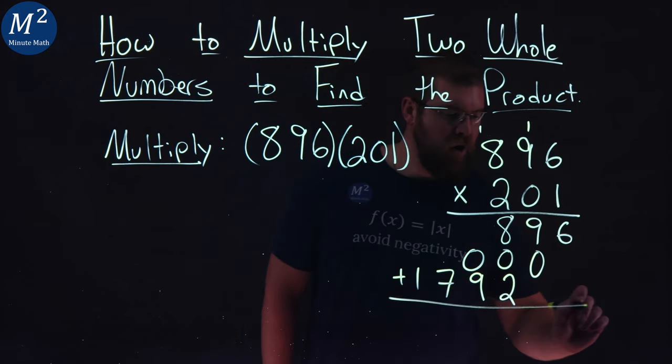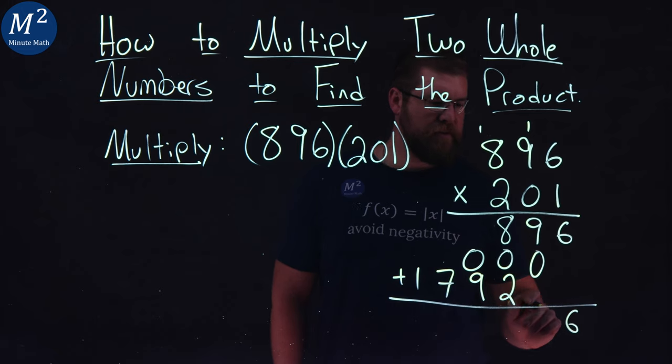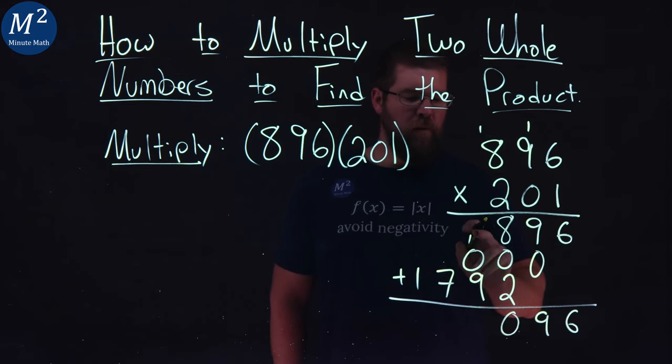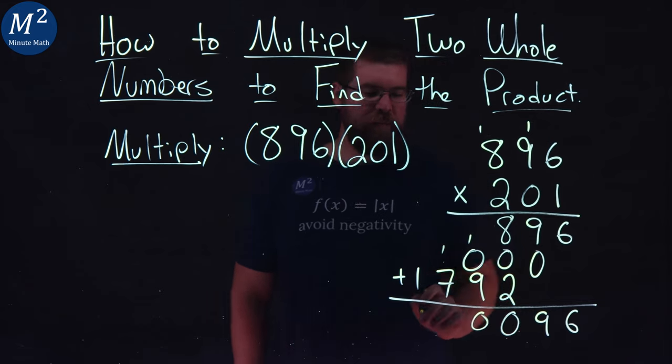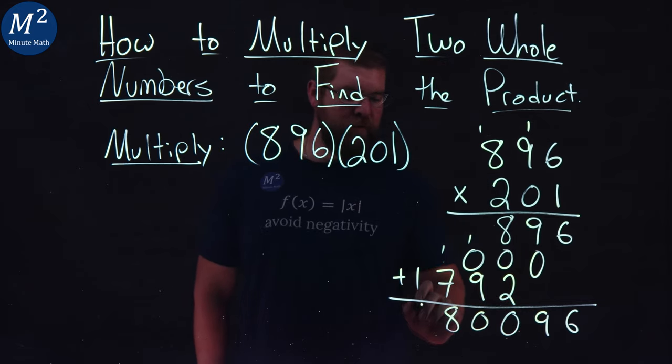Now we have to add all of these up. 6, nothing, 6. 9 plus 0 is 9. 8 plus 2 is 10, carry the 1. 1 plus 0 plus 9 gives me 10 again. 0, carry the 1. 1 plus 7 is 8 and 1 by itself is 1.